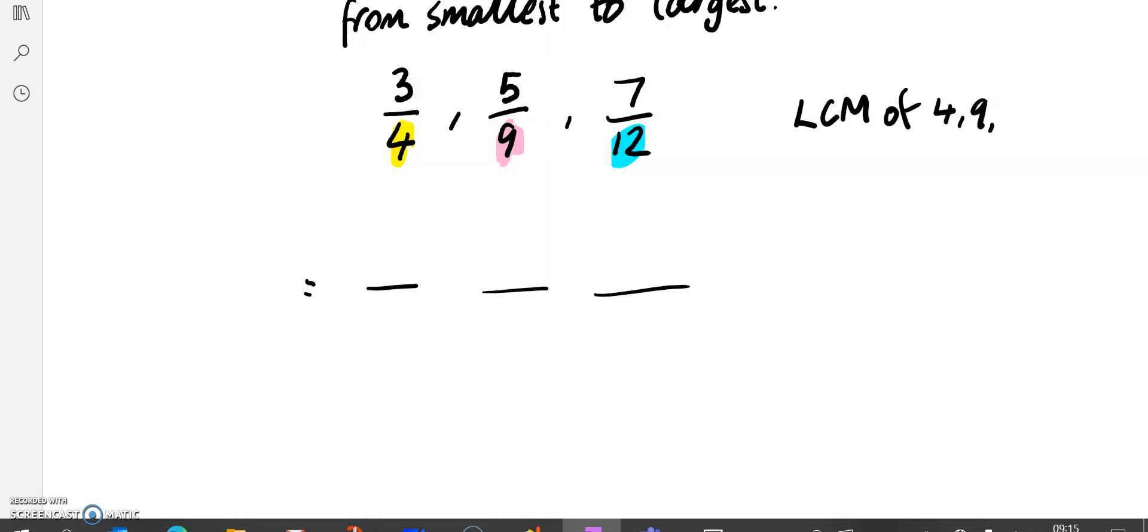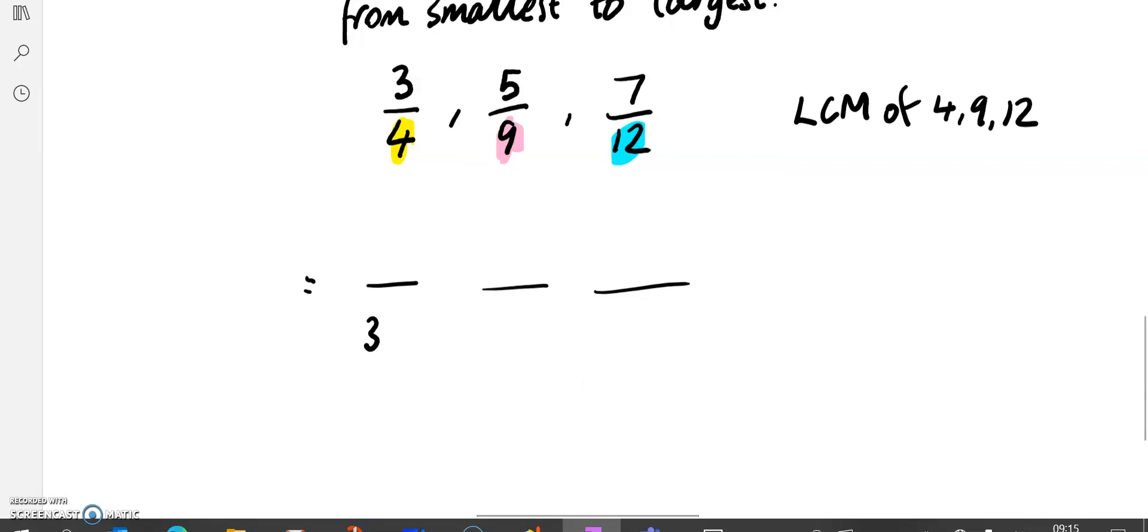And we want to find the lowest common multiple of 4, 9, and 12. What that means is what is the smallest answer that appears in the 4 times table, the 9 times table, and the 12 times table. That's the smallest answer that's in the 4, 9, and 12 times table. And if we think through this, the smallest answer that appears in all of those times tables is in fact 36.